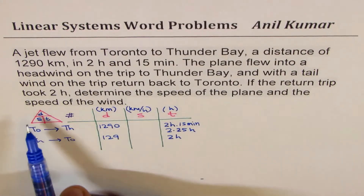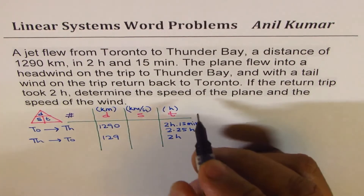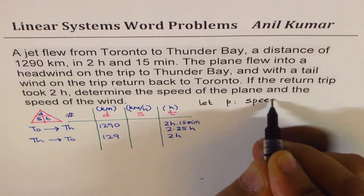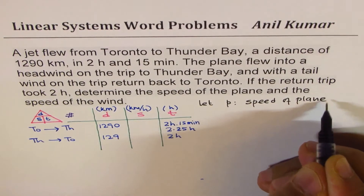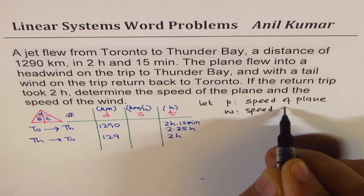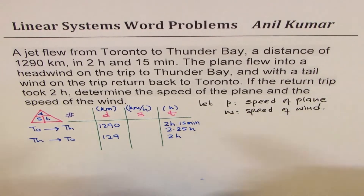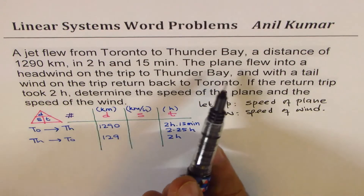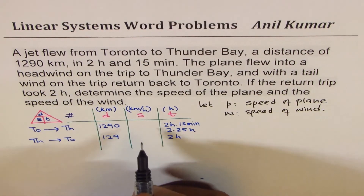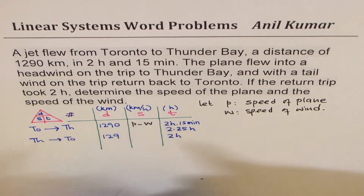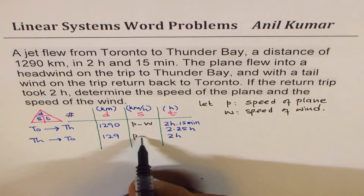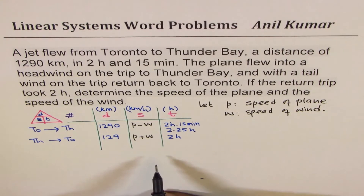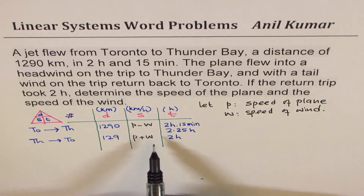Now for speed, we need to determine the speed of the plane and the speed of the wind, so let's define variables. Let p be the speed of the plane and w be the speed of the wind. The plane took longer to reach Thunder Bay because it flew into the headwind, so its effective speed was p minus w. With the tailwind on the return, the effective speed was p plus w.